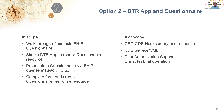There's a question about whether it's possible to implement prior auth without using the X12-278. The transaction is fairly limited. There is the possibility if you don't use a clearinghouse and you have a direct relationship between a payer and a provider, so the translation wouldn't necessarily have to be done. But payers today are using the information in the 278, so we're trying to augment that information. If there's a follow-up, please feel free to enter it.